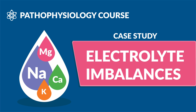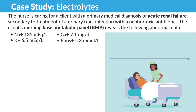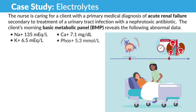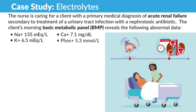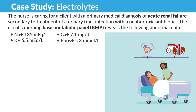Moving on to the case study for electrolytes. The nurse is caring for a client with the primary medical diagnosis of acute renal failure, secondary to treatment of a urinary tract infection with a nephrotoxic antibiotic. The client's morning basic metabolic panel, the BMP, reveals the following abnormal data.